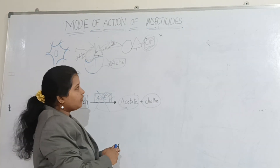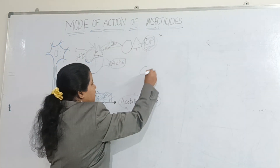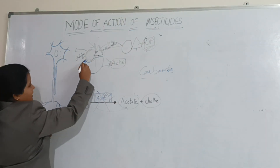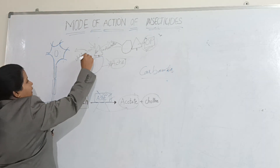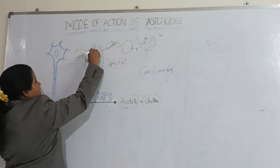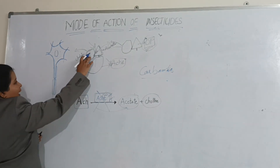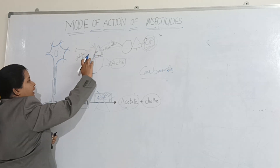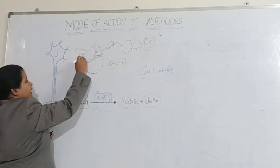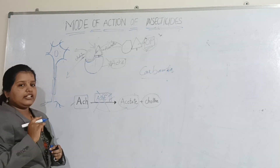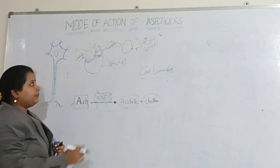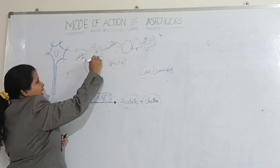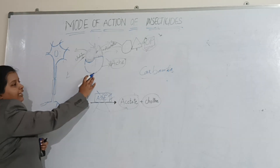In the case of carbamates, the carbamate insecticide also binds to the acetylcholinesterase receptor. After binding, one part will disintegrate initially, and after some time the other part of the insecticide will also get disintegrated. So the acetylcholinesterase receptor becomes free to bind again.